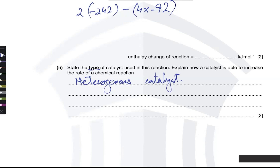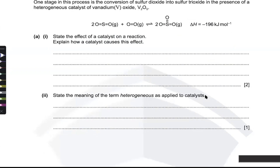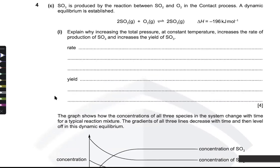To explain how a catalyst increases the rate of a chemical reaction: it decreases the activation energy, which means more molecules collide successfully per unit time — more molecules have energy greater than the activation energy. Saying 'it provides a different pathway' alone is insufficient; the real reason is that because of the lower activation energy, more particles are able to collide successfully. The effect of a catalyst on any reaction is to speed it up; it provides a different pathway with lower activation energy.